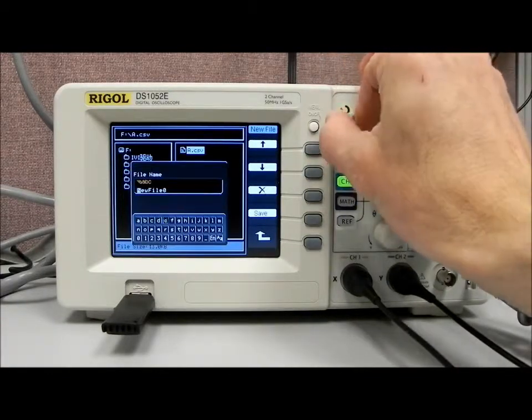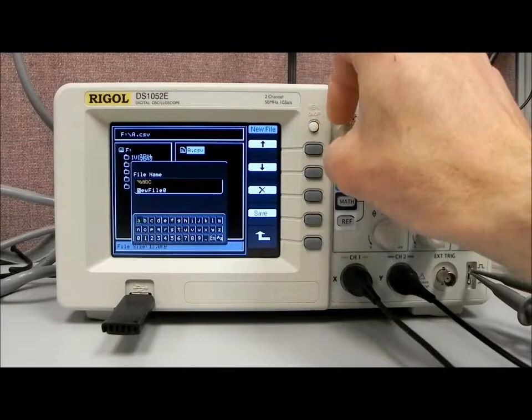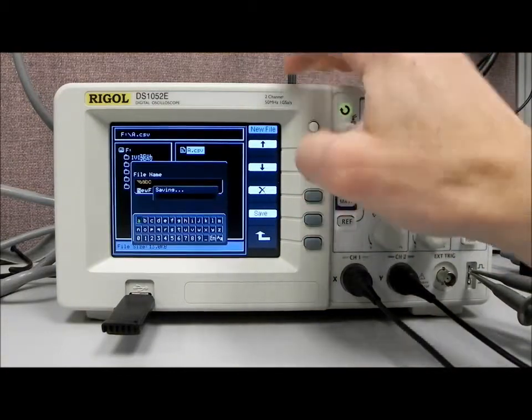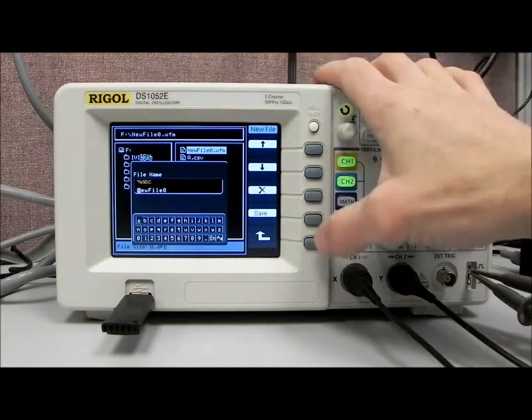We can also change the name of the file if we'd like using the rotating scroll, and we just hit save, and now you'll see that new file dot waveform has shown.